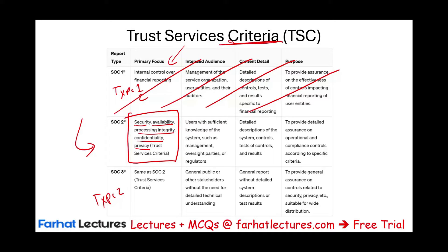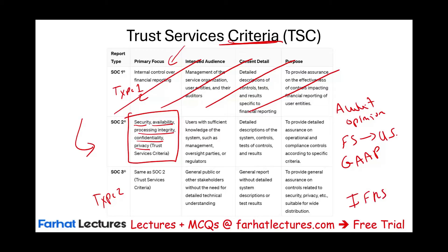Think of when we conduct a traditional audit: we issue an opinion on whether the financial statements are fairly presented according to a certain criteria — generally accepted accounting principles in the U.S., or IFRS internationally. When we issue a SOC 2 opinion, we need a criteria as well, and what's the criteria? It's the trust services criteria. That's why we need to learn about trust services — because we need a measurement framework to issue a SOC 2 Type 1 or Type 2 report.